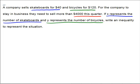How many skateboards were sold? X. How much is each skateboard sold for? $40 per. So we're going to get 40X from there. Then in green we have Y bicycles sold and they're sold for $120 apiece, so we get 120Y from there.